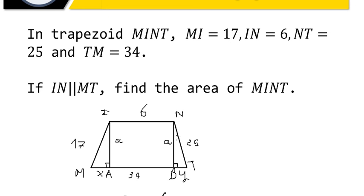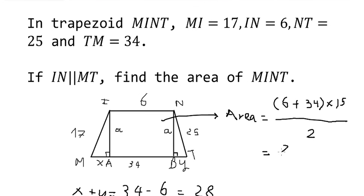Now we can find the area. That should be 6 plus 34, multiplied by 15, divided by 2. We get 300 square units. This is the end, thank you for watching.